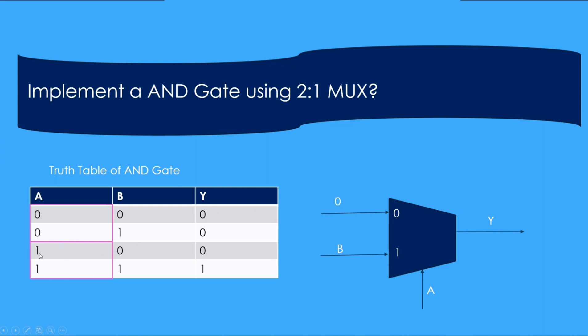When A is 1, Y is always equal to B. So that means when A is 1, I know this input is going to pass to Y. So let us tie it to B.